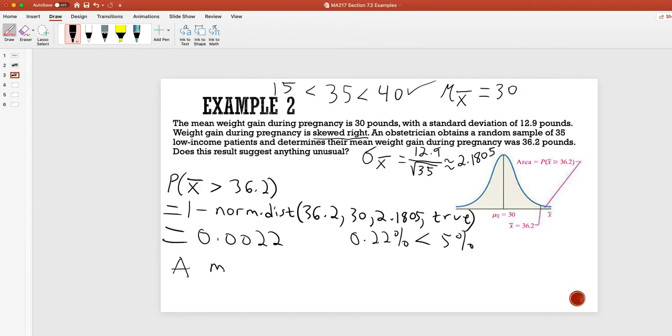So, a mean weight gain of 36.2 pounds is unusual. Again, due to the fact that the probability is less than 5%.